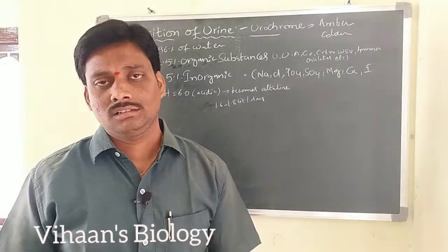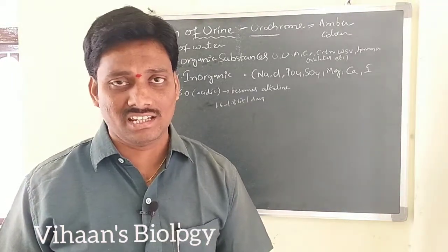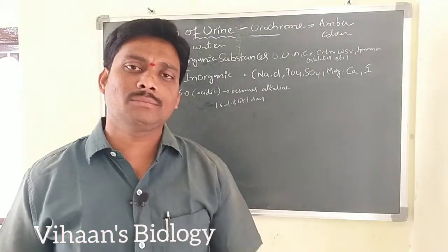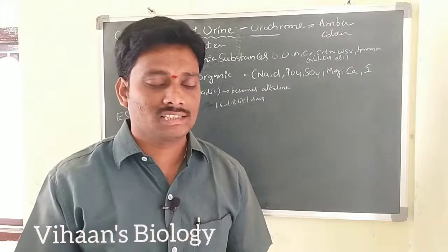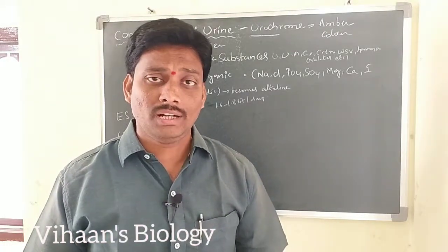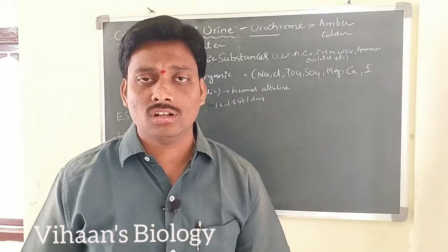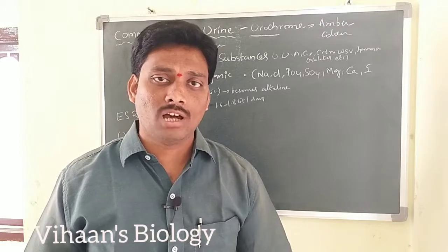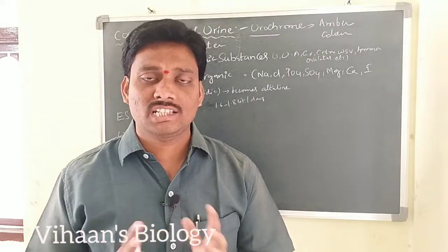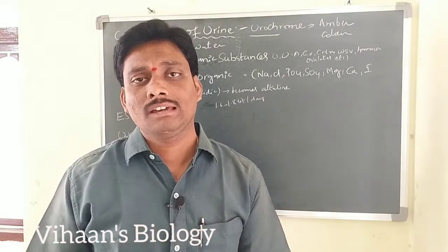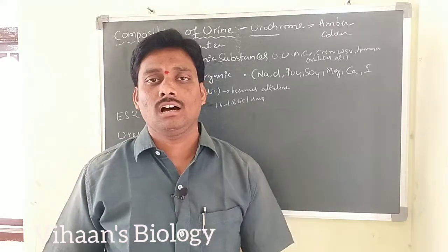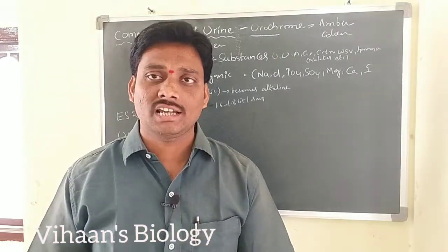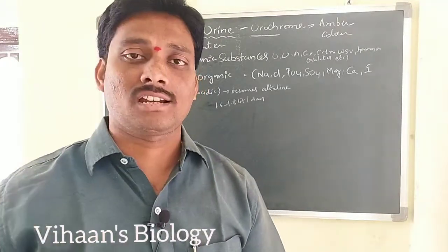The pH of urine is 6, which is acidic in nature. However, when de-amination of urea takes place, ammonia is formed, and when ammonia is formed, the urine is converted to alkaline in nature. So normally urine is acidic at pH 6, but de-amination converts urea into ammonia, making it alkaline.